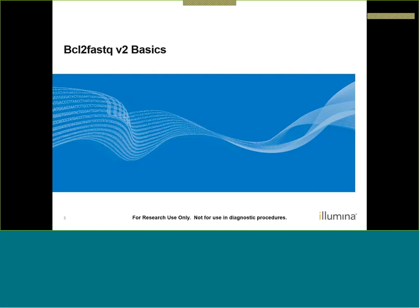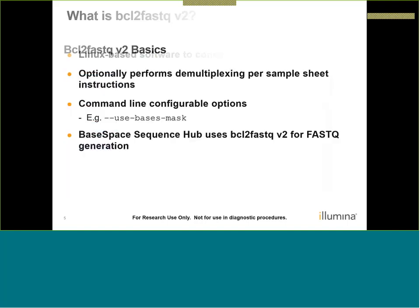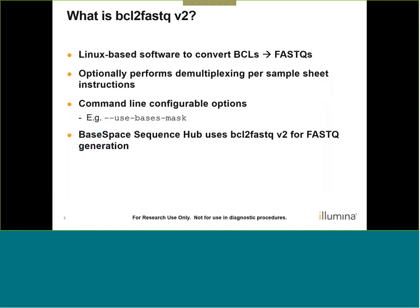For our first section, BCL to FASTQ version 2 basics — what is BCL to FASTQ version 2? It is a Linux-based software used to convert BCL files, which are the main output of Illumina sequencers, and convert them to FASTQ files, which most experimenters are interested in using for downstream analysis.